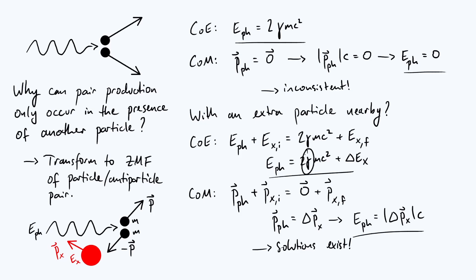But the idea is that because we've introduced extra degrees of freedom, extra parameters delta e_x and delta p_x, for a particular value of gamma we can find values of delta e_x and delta p_x that will make the system of equations work out.